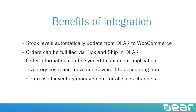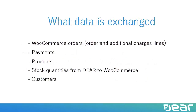What data is exchanged? WooCommerce orders — order lines and additional charge lines — all come across from WooCommerce into Deer Inventory. You also have the option to import historical order payments. You have the ability to exchange products between Deer and WooCommerce, and stock quantities from Deer to WooCommerce can be updated. Customer information also comes with every order generated via WooCommerce.